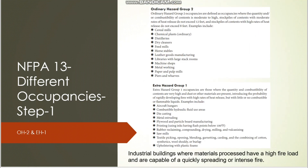Ordinary Hazard Group 2 is also an industrial building. Here the quantity of combustibles is high and the stockpile height goes up to 12 feet — in Group 1 it was up to 8 feet. If it exceeds 12 feet it moves to high-piled storage. Examples include paper mills and pulp mills, where the quantity is high. The rate of heat release is also medium-to-high.